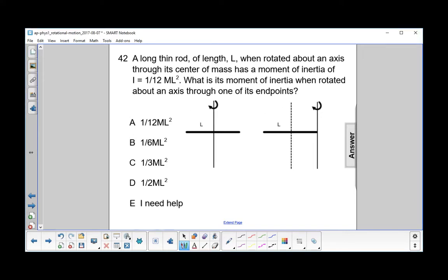A long, thin rod of length L, when rotated about an axis through its center of mass, has a moment of inertia of I equals 1/12 mL squared.